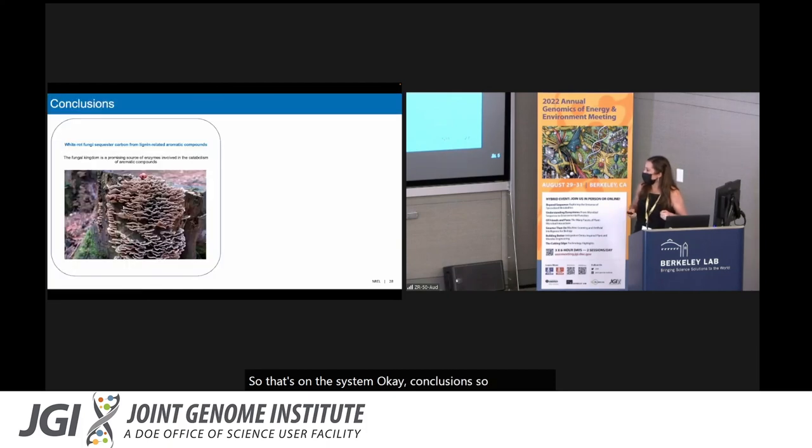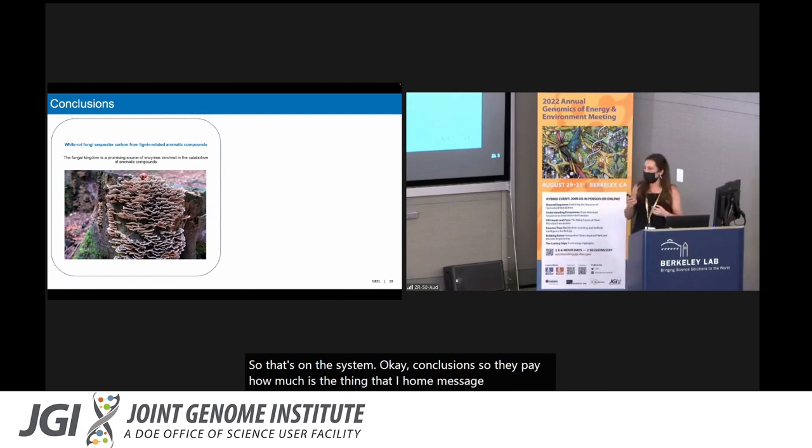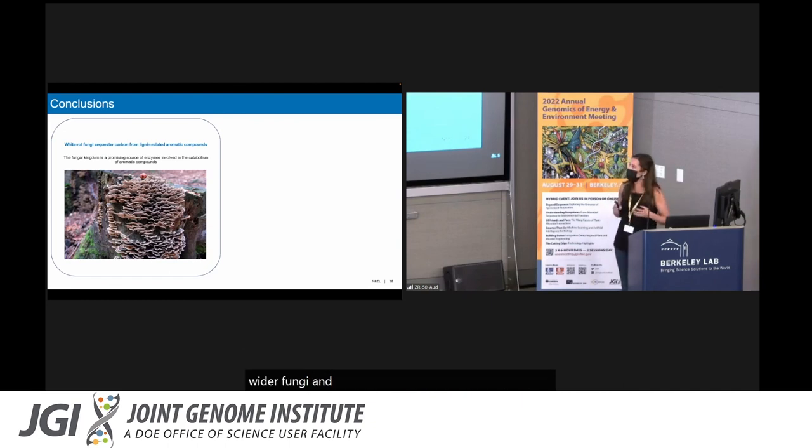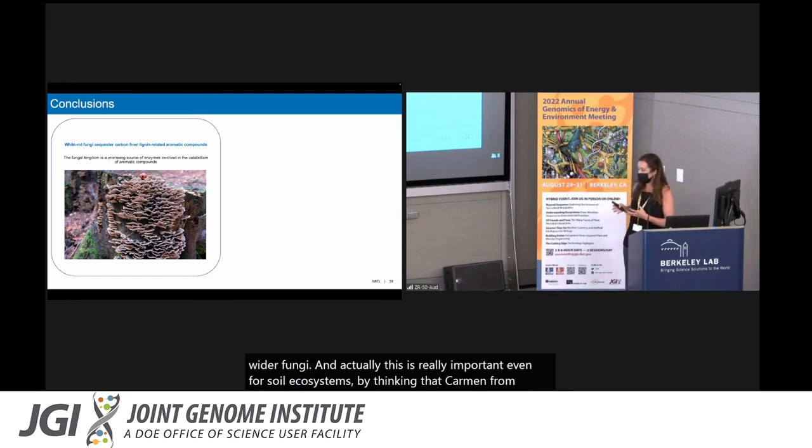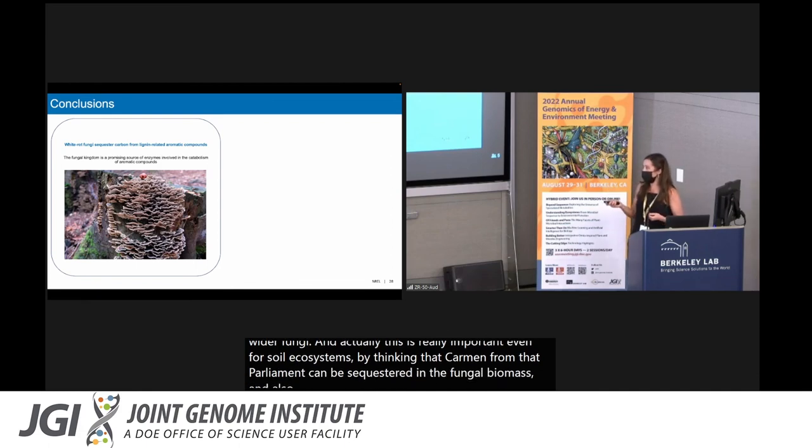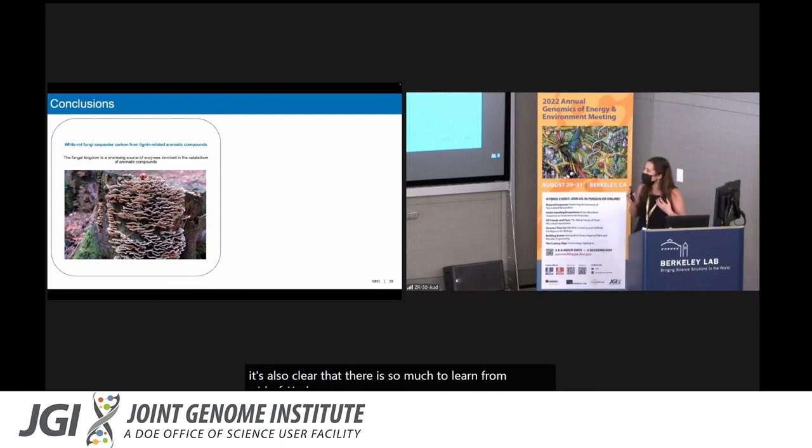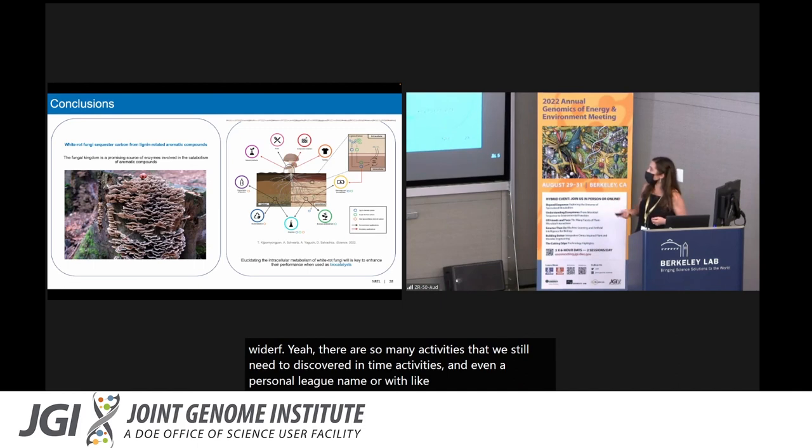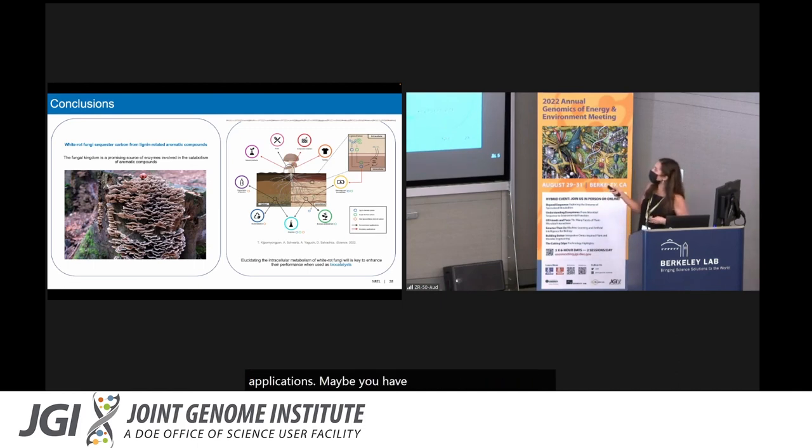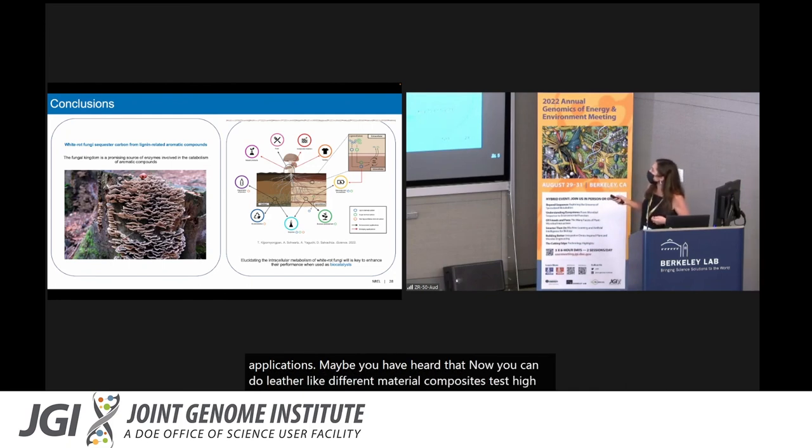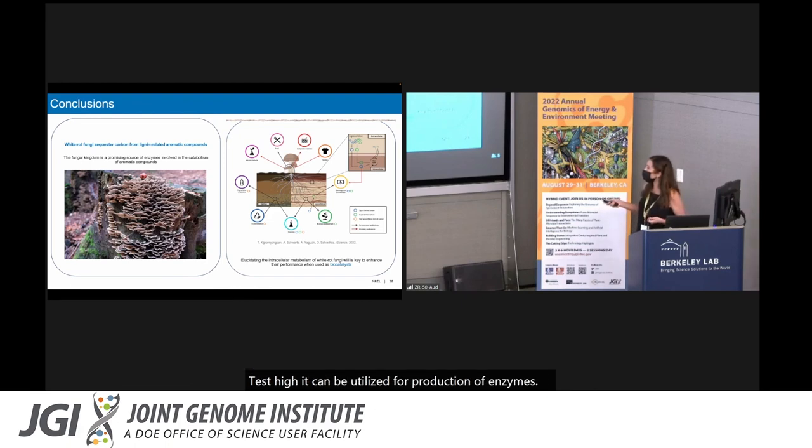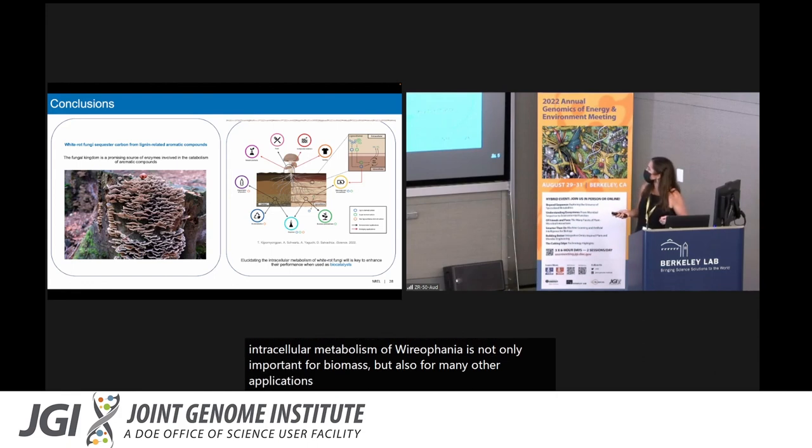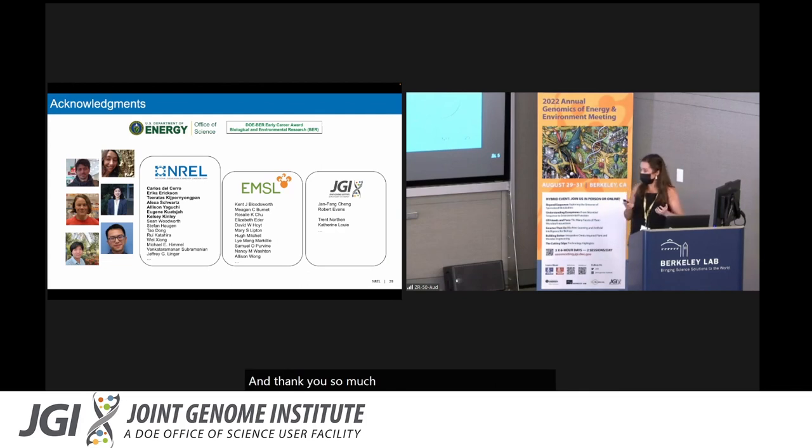Conclusions. The take home message is that we have demonstrated for the first time that carbon derived from lignin can be sequestered by white rot fungi. Actually, this is really important even for soil ecosystems, thinking that carbon from that polymer can be sequestered in the fungal biomass. Also, I think it's also clear that there is so much to learn from white rot fungi. There are so many activities that we still need to discover, enzyme activities. Even apart from lignin or wood, white rot fungi can be utilized for many different applications. Maybe you have heard that now you can do leather, different materials, composites, textiles. It can be utilized for production of enzymes, degradation of plastics. Understanding the intracellular metabolism of white rot fungi is not only important for biomass, but also for many other applications.